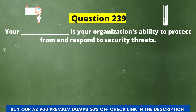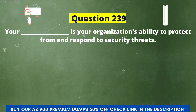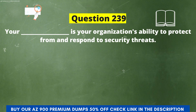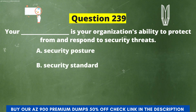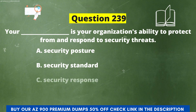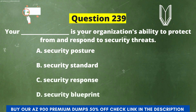Next question: Your dash is your organization's ability to protect from and respond to security threats. The options are: A) Security Posture, B) Security Standard, C) Security Response, D) Security Blueprint. The correct answer is option A, Security Posture.